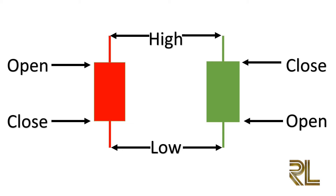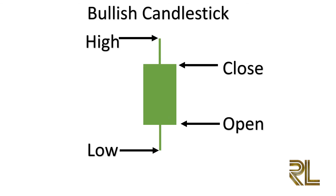What's a bullish candlestick? A bullish candlestick represents market prices that are moving up. If you look back at the one hour candlestick, you'll see that the close price is higher than the open price. This means that in that one hour, the market has moved from the open price up to the close price.